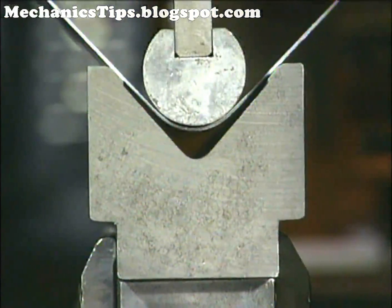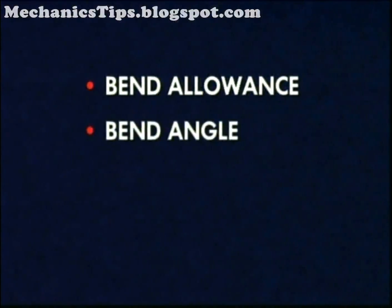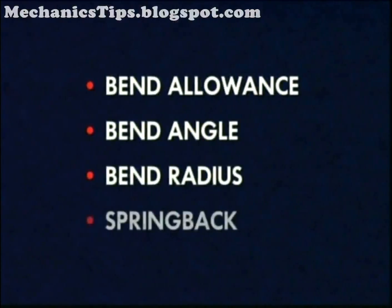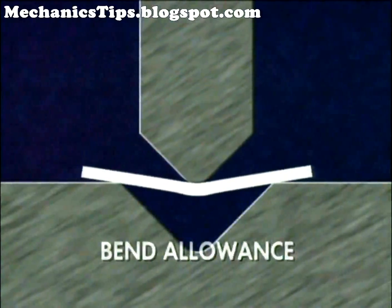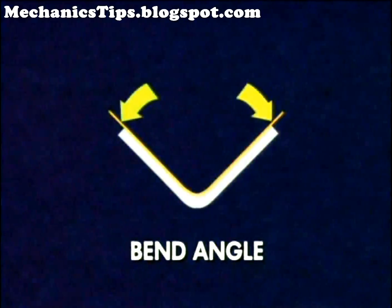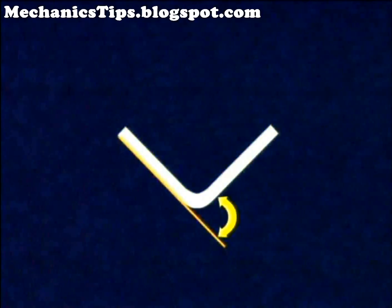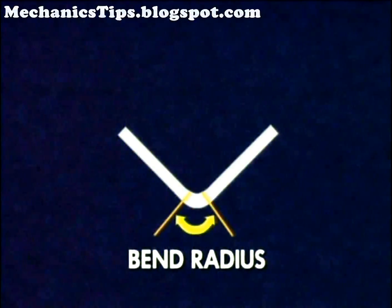The principal terms used to describe bending on press brakes are bend allowance, bend angle, bend radius, and spring back. Bend allowance is the pre-bent length of material that must be included in a blank to allow for any deformation that occurs due to the bending operation. The bend angle is usually the included angle of the bent workpiece; it can also refer to the supplementary angle formed by the two bent tangent lines. The bend radius is the tangent line where the flat straight section of the part stops and the radius of the bend begins.